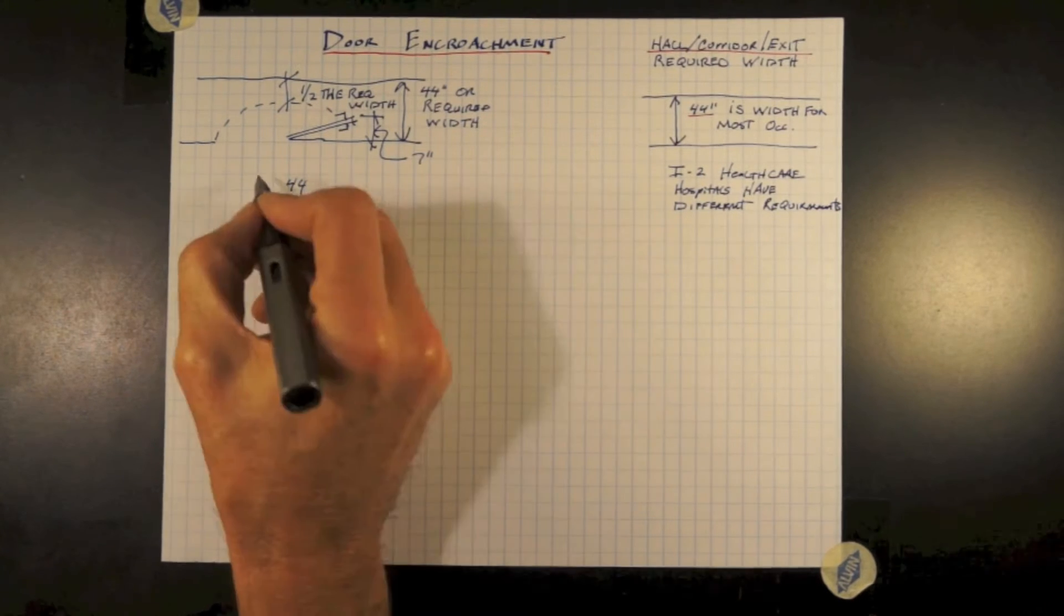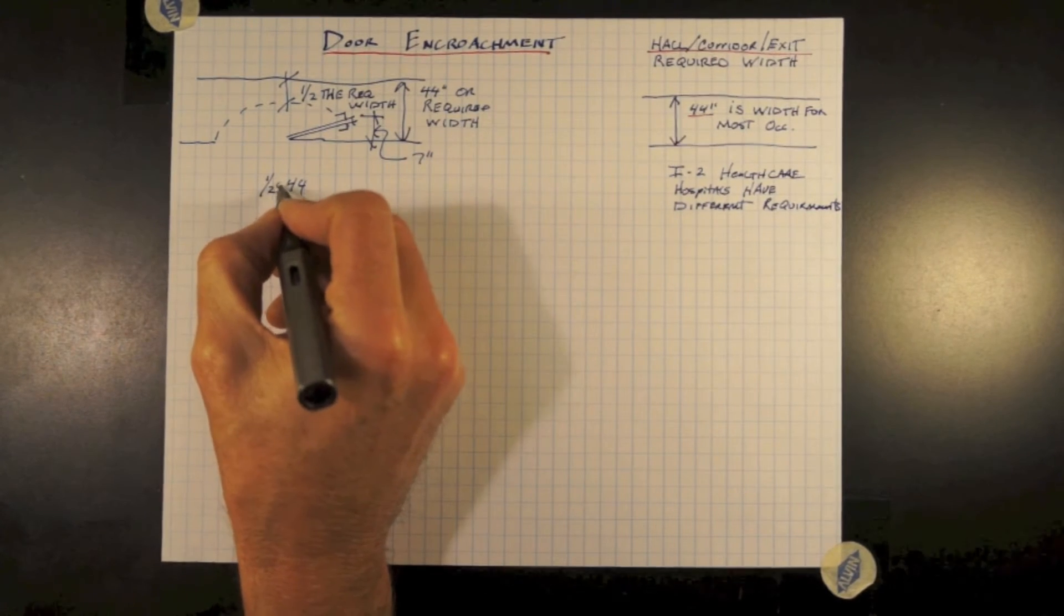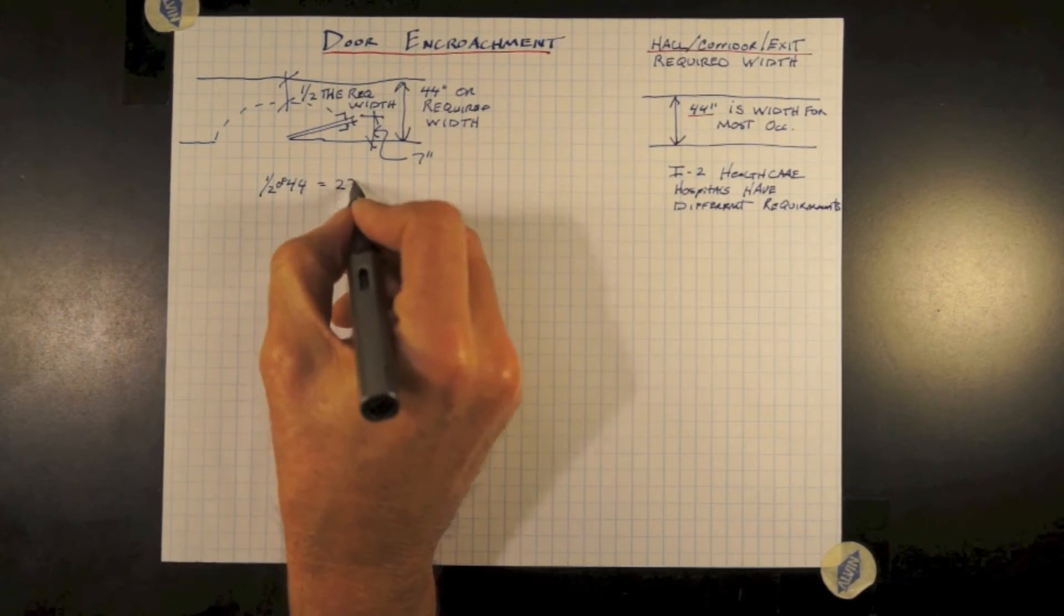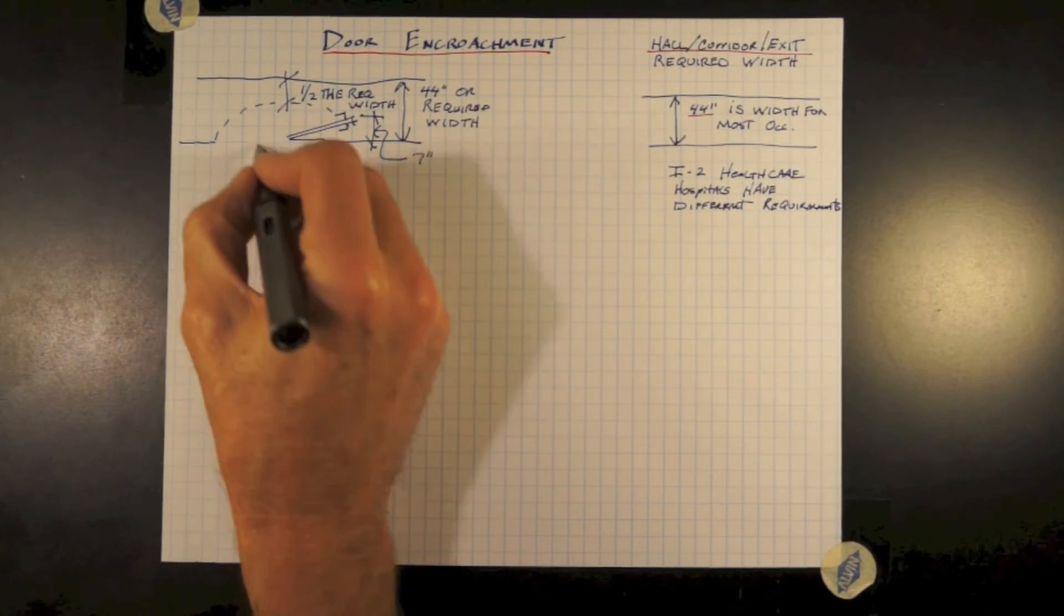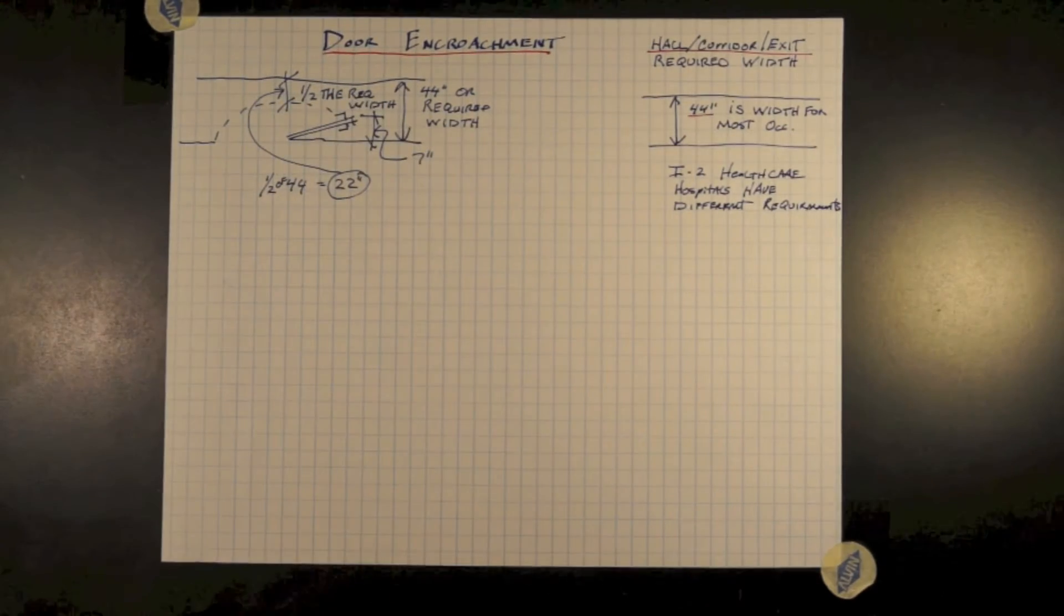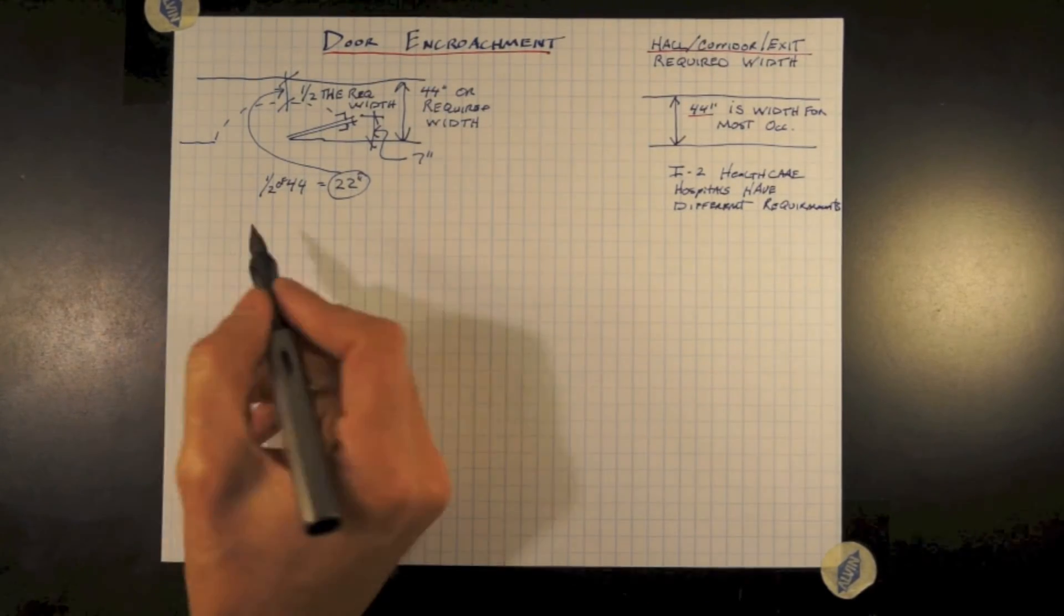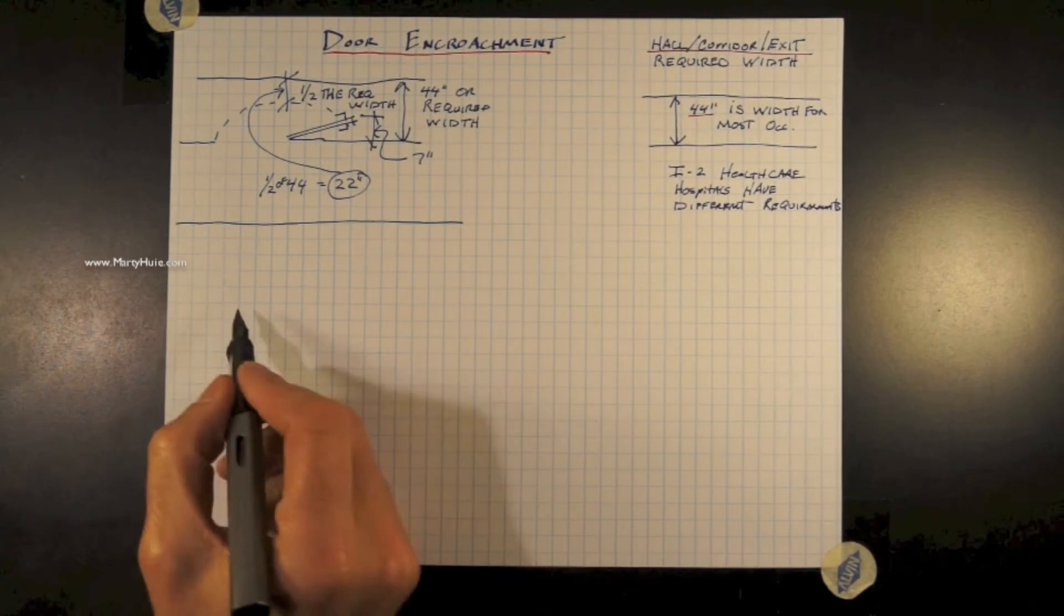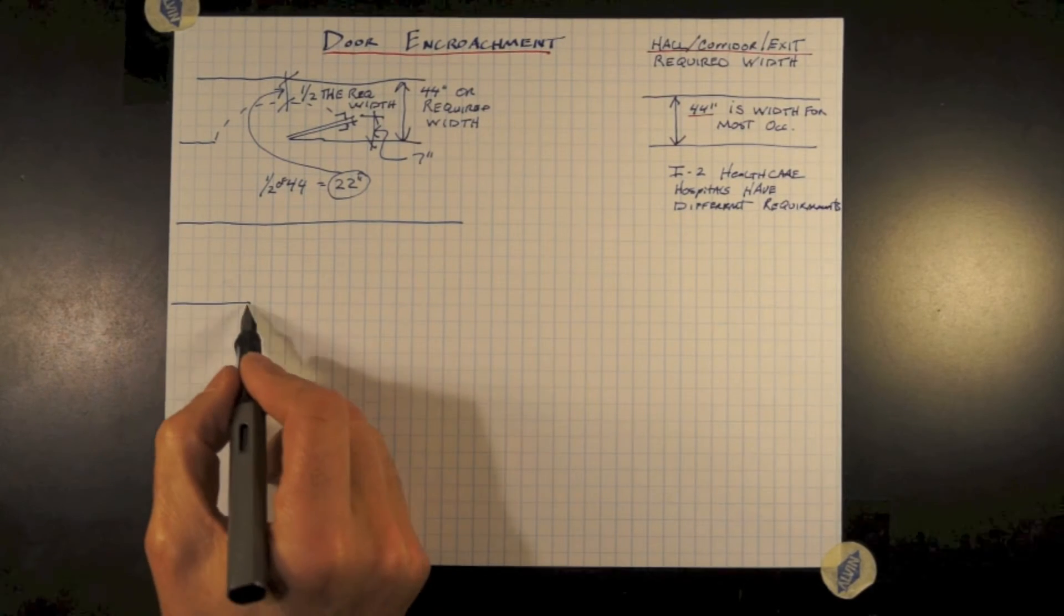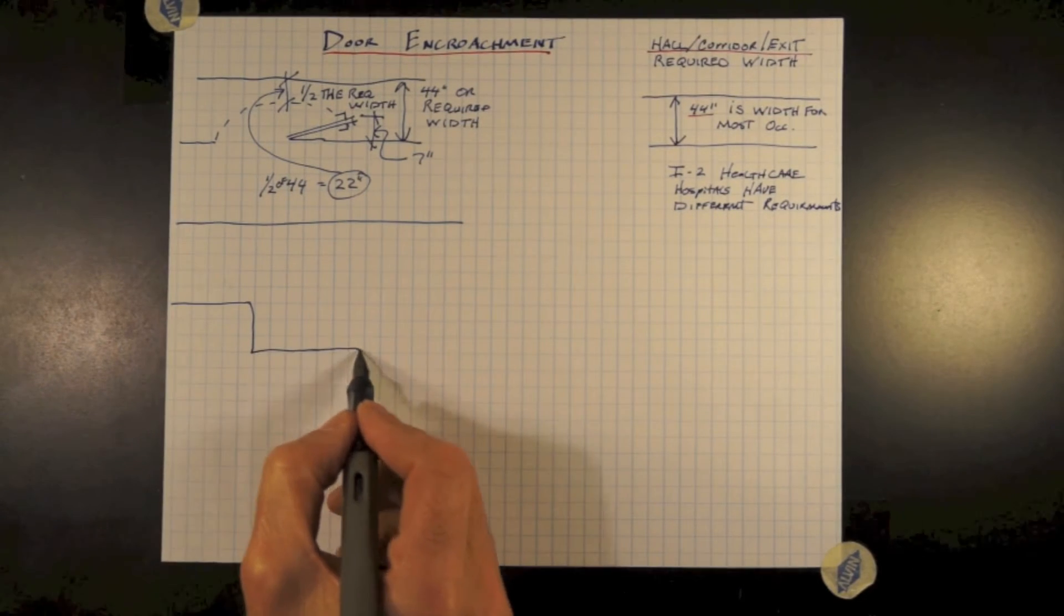So, assuming 44 inches is our required width, one half of that is 22 inches. Therefore, at the closest point the door is closing off the corridor cannot be less than 22 inches if the door is at its 90 degree angle.